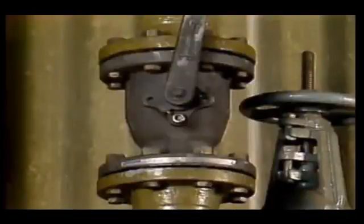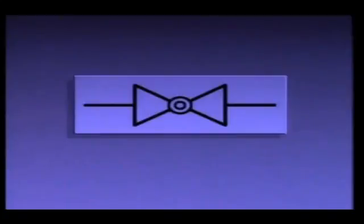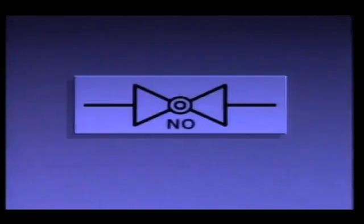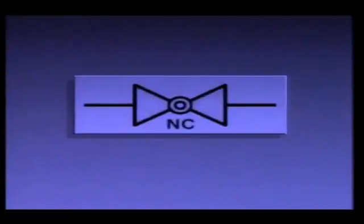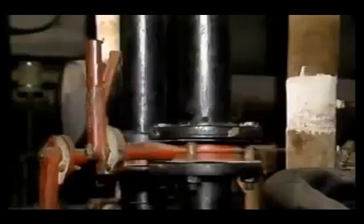The body of a ball valve may be either cylindrical or round in shape. On a piping system diagram, a ball valve symbol generally looks like this. If the symbol looks like this or has the letters NO beside it, then the valve is normally open. If the symbol is filled in or has the letters NC beside it, then the valve is normally closed.